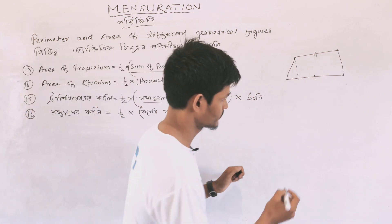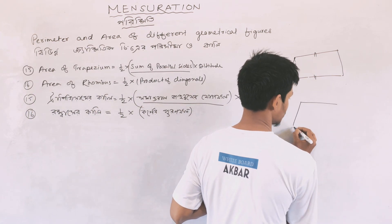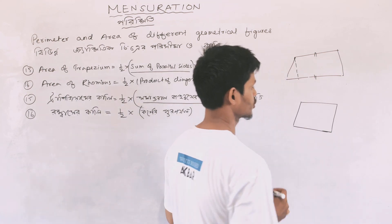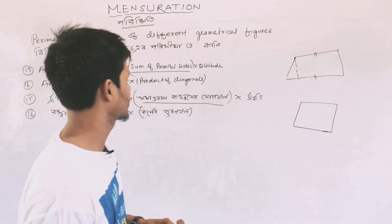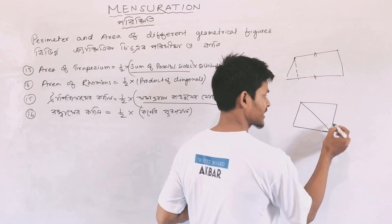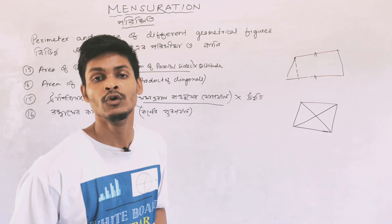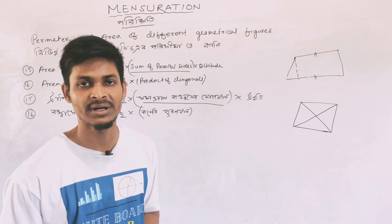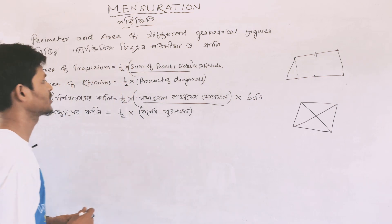For rhombus, all sides are equal. The formula for area of rhombus is half into the product of the two diagonals. We take one diagonal and another diagonal, multiply them together, and then take half of that.